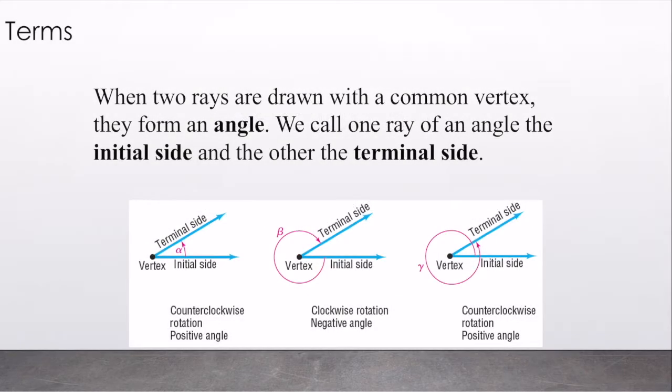When two rays are drawn with a common vertex, they form an angle. We call one ray of an angle the initial side and the other the terminal side. We're always going to rotate counterclockwise, so not like a clock, opposite of that. Here I have a counterclockwise rotation of a positive angle.